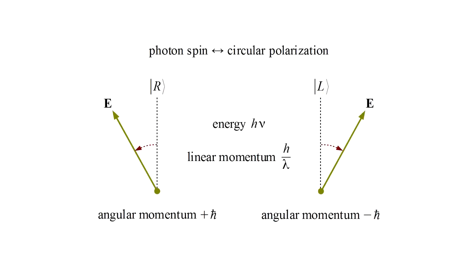So the quantum mechanical concept of photon spin corresponds to the classical concept of circular polarization. A photon of frequency nu carries energy h nu, linear momentum h over lambda, as we showed in video two, and angular momentum plus or minus h bar, plus for the R state, and minus for the L state.